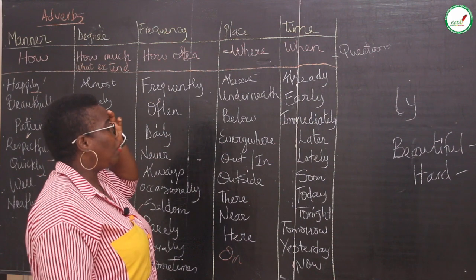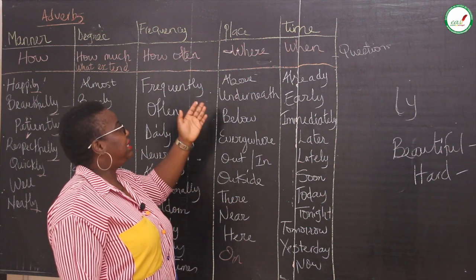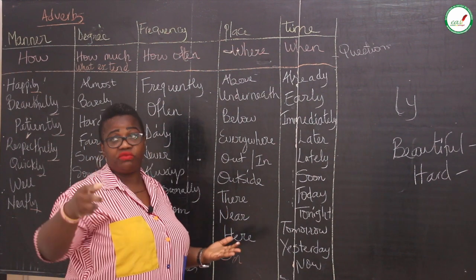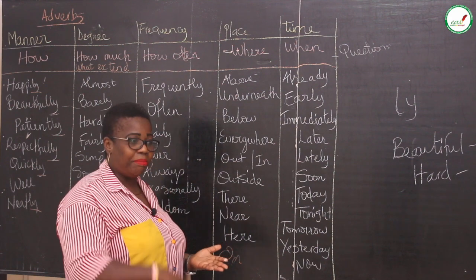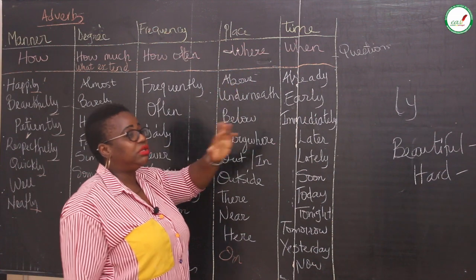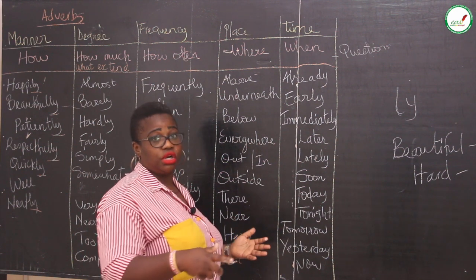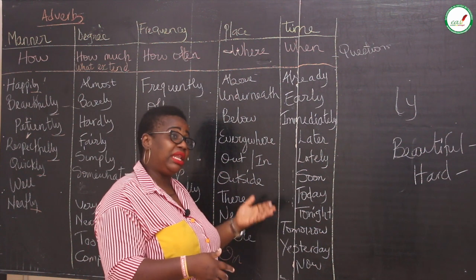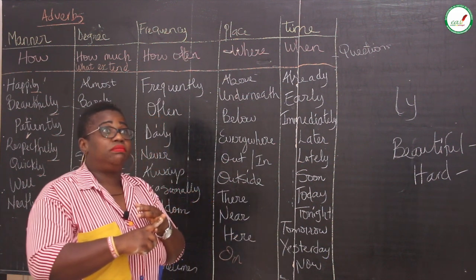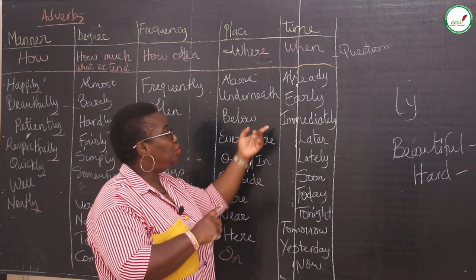And if you pose yourself the question of place — the location, where is it supposed to be — it takes you to the adverb of place. Is it underneath? Is it on top? Is it across? Is it above? Is it on the wall, on the floor, in the bag, in between? All of that tells you it's an adverb of place. And if you're thinking about when did it occur or when is it going to occur, it takes you to the adverb of time. Often times the adverb of time is either at the beginning or at the end of a sentence.